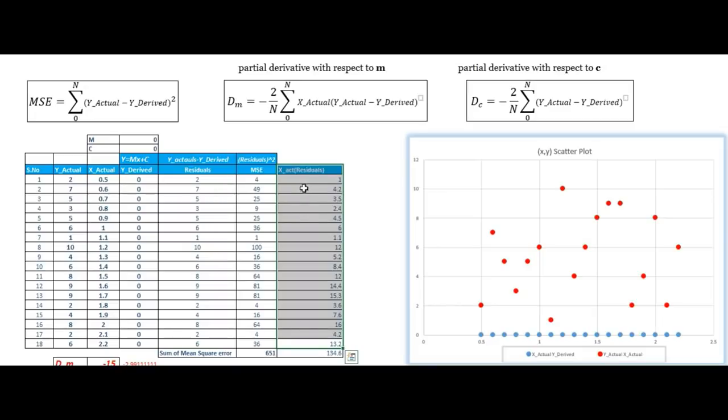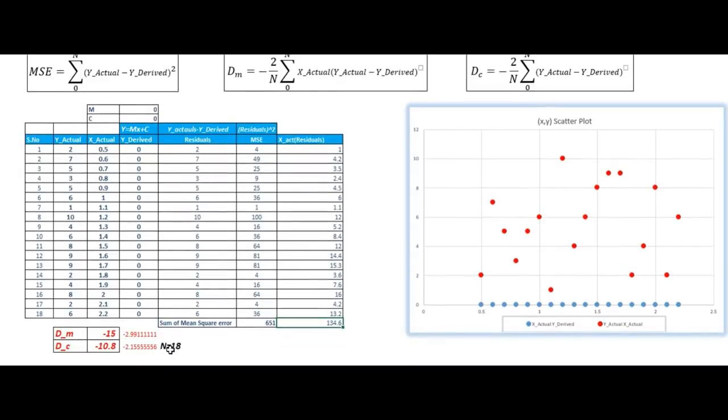Now, at the end, we need to sum out all these. So here, we are getting 134.6. n is the total number of points, so that is 18. So let's put this value to this function. So once we will put all these values to this function, we are getting the value of dm is minus 15 and dc minus 10.8.